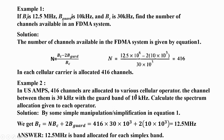Example 2: In a US AMPS system, 416 channels are allocated to various cellular operators. The channel bandwidth is 30 kHz with a guard band of 10 kHz. Calculate the spectrum allocated to each operator. Rearranging the equation: BT = N × Bc + 2 × Bg. Substituting N = 416, Bc = 30 kHz, and Bg = 10 kHz, we get BT = 12.5 MHz. This is the total band allocated to each operator.